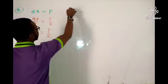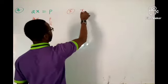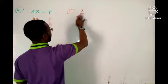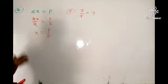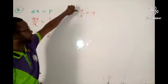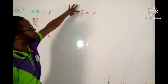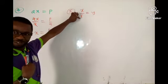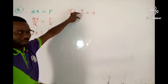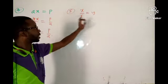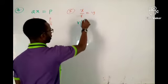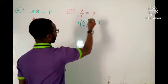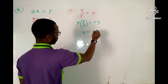Now if I have x over r equals y, I'm looking for x but something is dividing it. The opposite of division is multiplication, so I'll multiply both sides by the denominator r. That gives r times x over r equals r times y; this r cancels this r, and I get x equals ry — that's what I'm looking for.